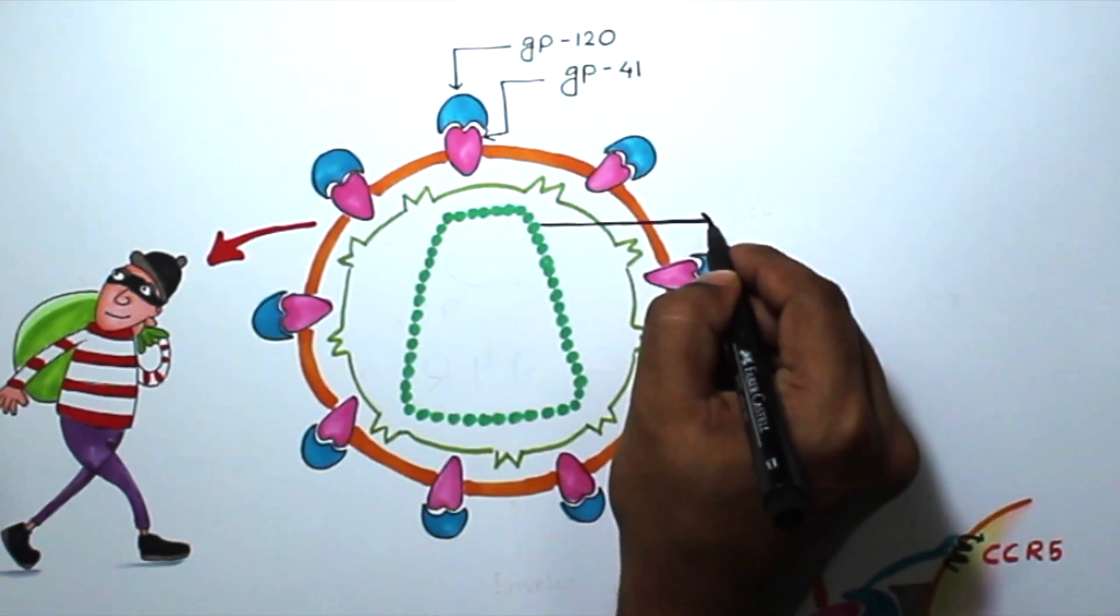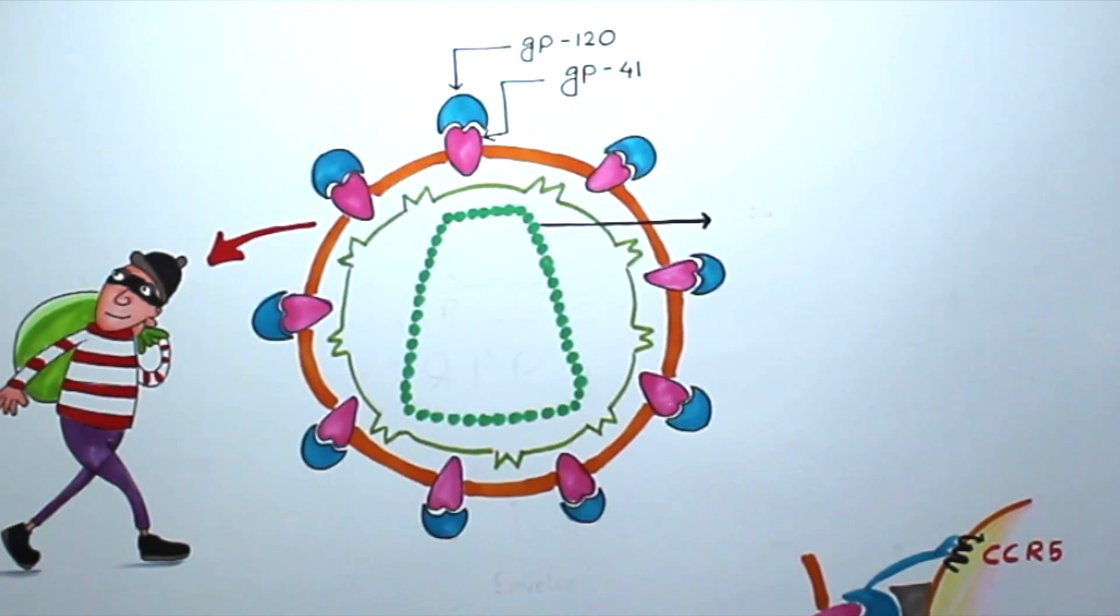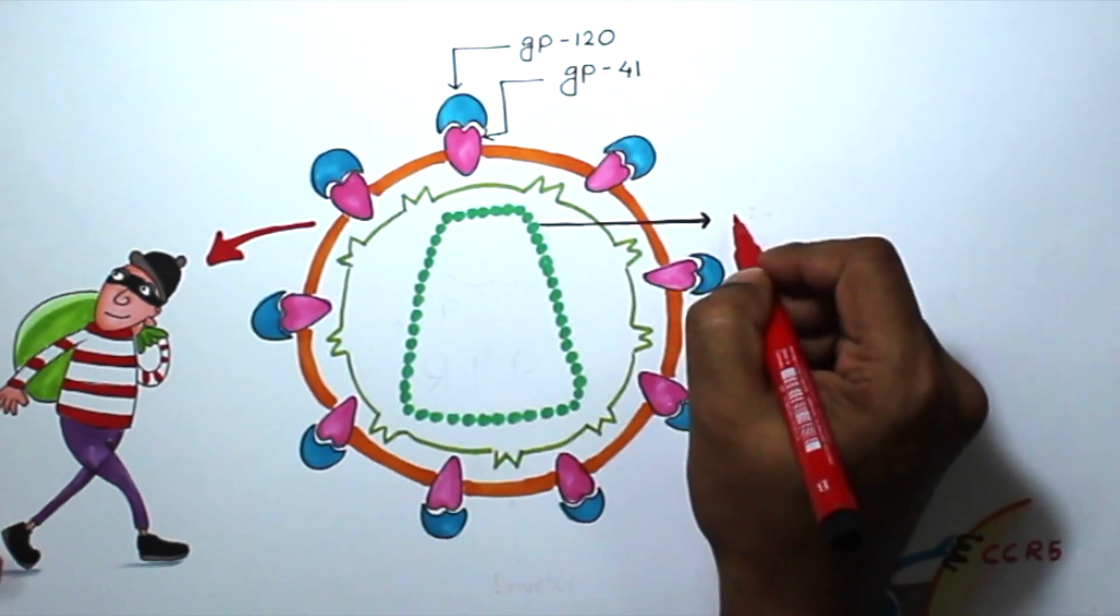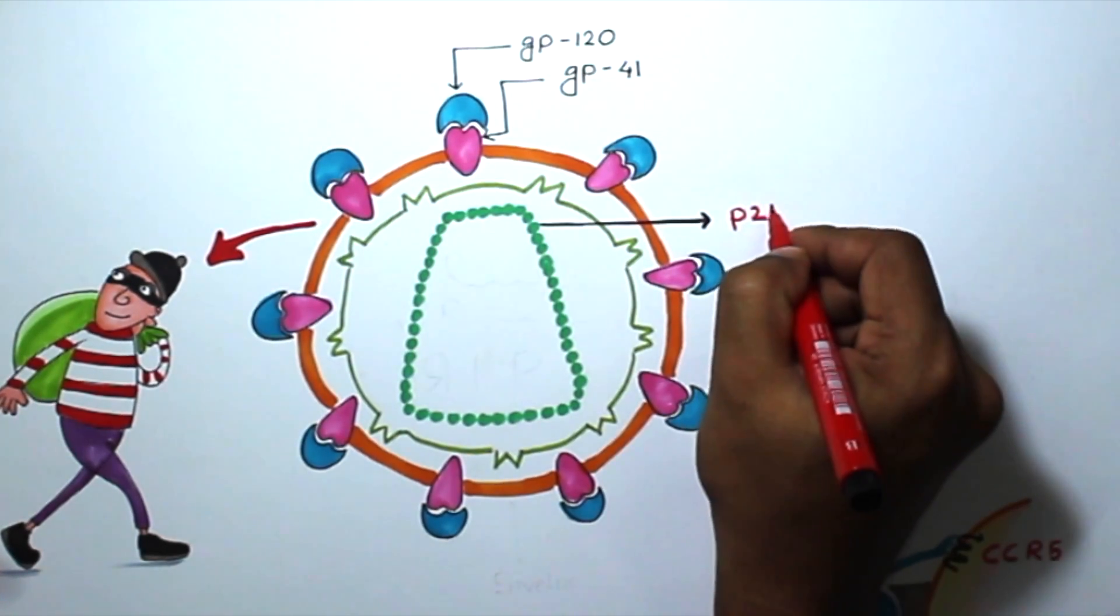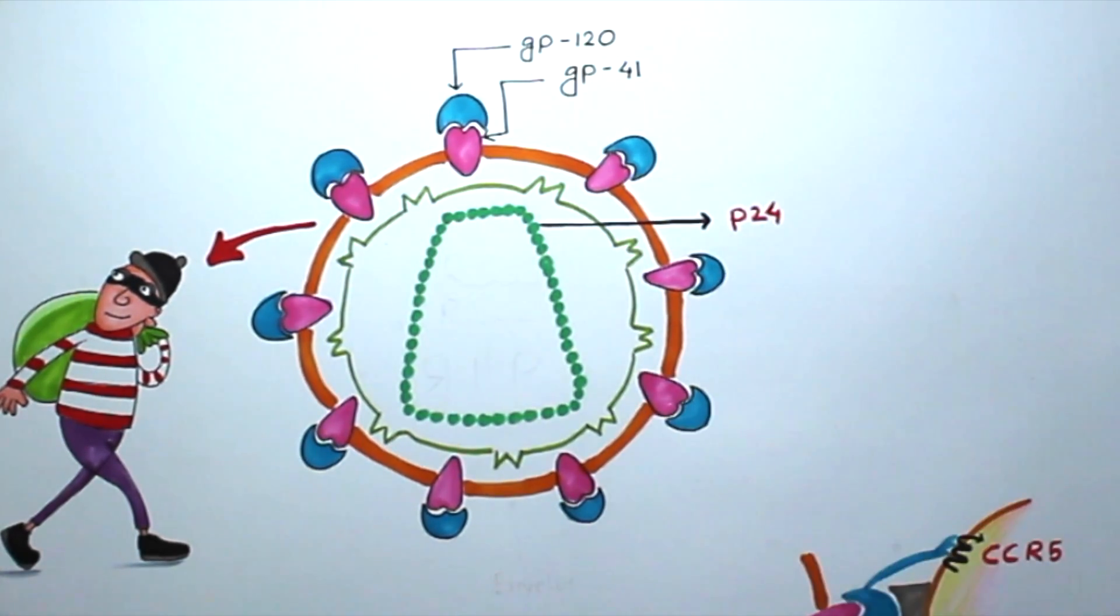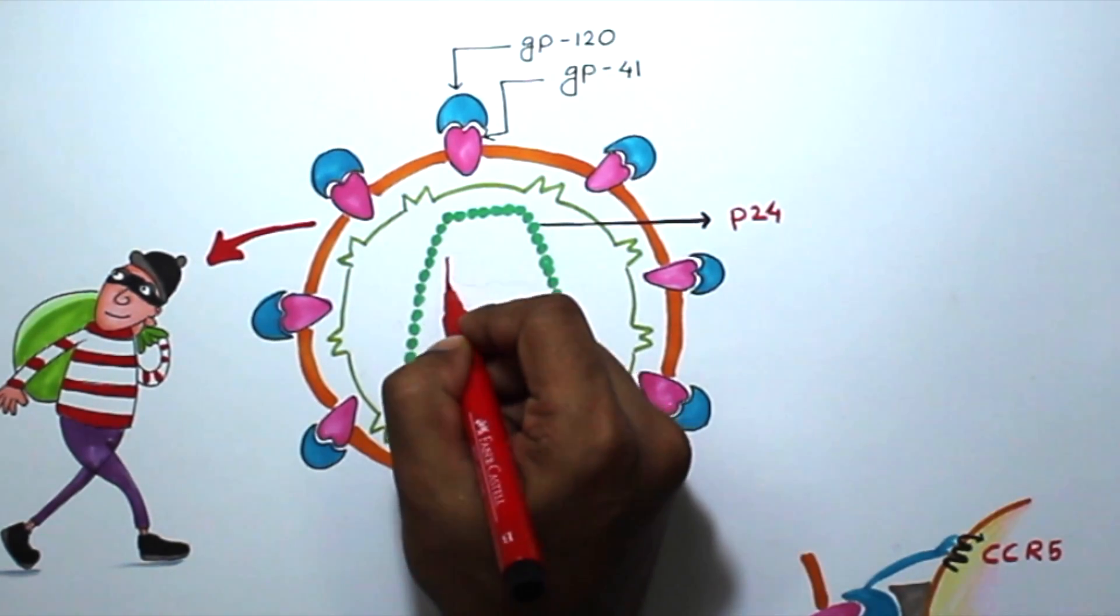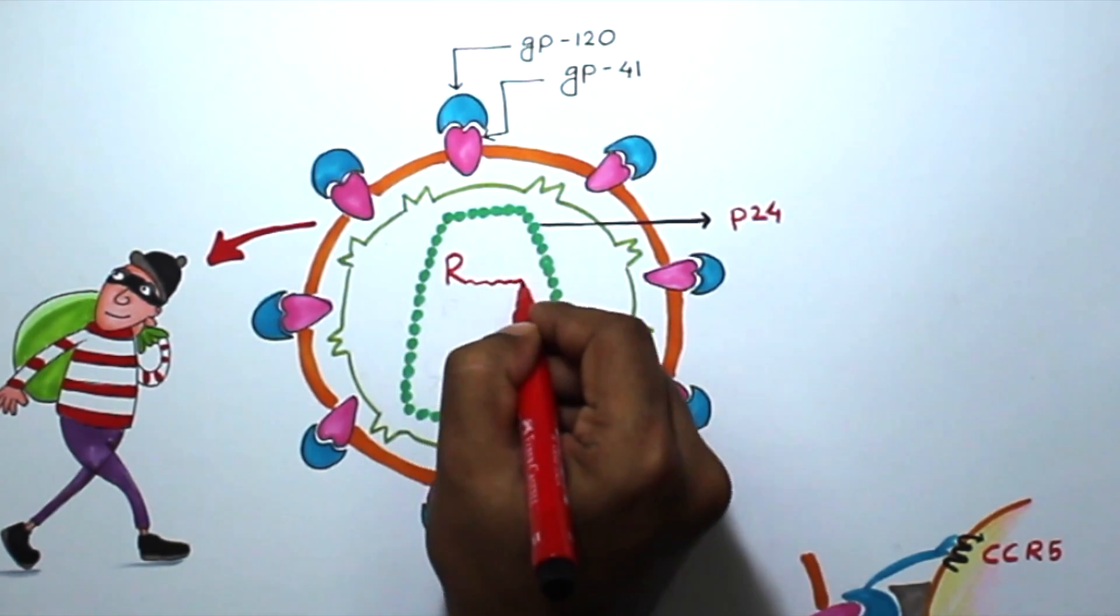You know, serum concentration of p24 antigen is high in the first few weeks after infection, so it is used for early diagnosis even when the antibody levels are very low. The capsid contains two identical RNA molecules. It is important to know that they are not complemented to each other—two separate identical molecules.